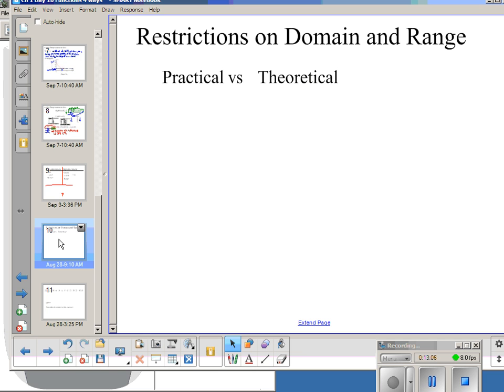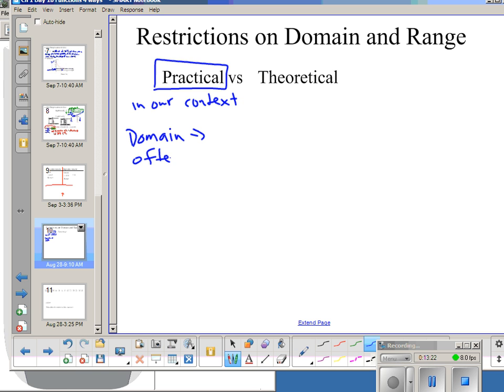Then lastly, I want to talk about restrictions on domain and range. And there's two ways to think about this. Practical restrictions are what makes sense in our context, in our problem situation. For domain, it's very often positive. We often don't want to think about negative domains. In our coffee situation, the time before time zero makes no sense. And so, our restriction would be x would be greater than or equal to zero. And then our range practically was no bigger than—f of x between 20 and 90. Now, I think practically we probably do hit that 20. And so, I could equal 20 degrees.